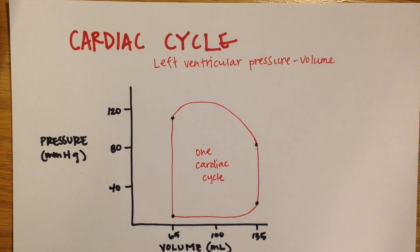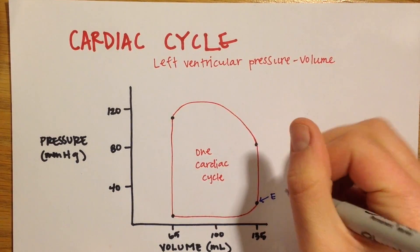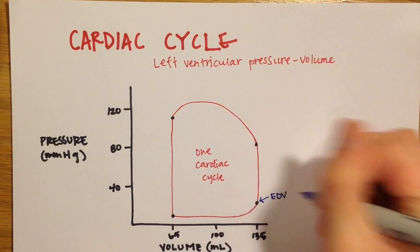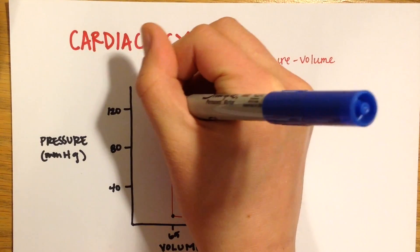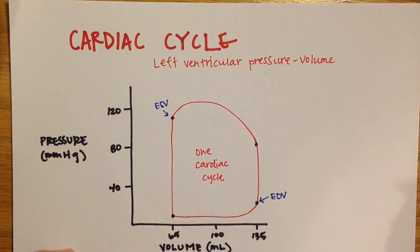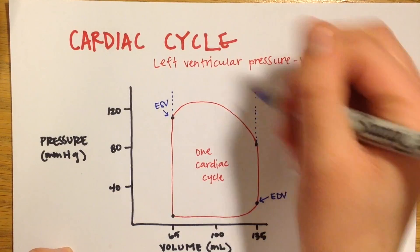The right bottom dot on this graph represents the end diastolic volume, and the left top dot represents the end systolic volume. Remember that this is talking about the left ventricle specifically. The whole volume of blood that entered and left the heart represents the stroke volume.